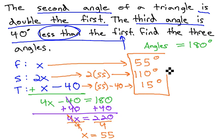These are now the three angles of the triangle: 55 degrees, 110 degrees, and 15 degrees. You'll notice that if we add them up, they equal 180. Also, the second angle is double the first, and the third angle is 40 degrees less than the first. By representing each angle algebraically and knowing they add up to 180, we can quickly find the angles of the triangle.